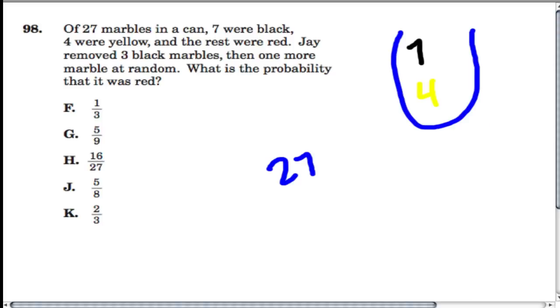Let's just calculate that real fast. If there are 27 marbles and 11 of them are either black or yellow, what's left is 16, and those are all red. So we have 7 black, 16 red, 4 yellow.